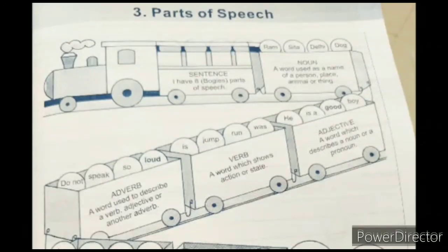So let's revise one more time. What is a sentence? A sentence is a group of words which makes complete sense. Now come and see this bogey, this train which has eight bogeys. And these eight bogeys are the part of a sentence. You can see an engine. You can say that sentence is an engine which is comprised of eight bogeys. So let's see what are these eight bogeys. What are the names of these eight bogeys.